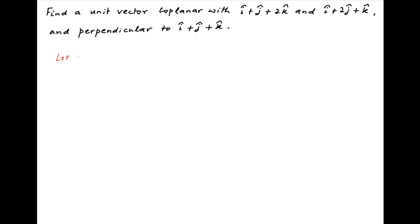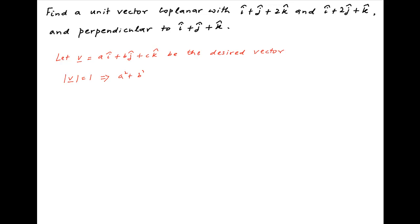Let the desired vector be equal to ai plus bj plus ck. Let's denote this vector by vector v. Now this is a unit vector, therefore the absolute value of vector v is equal to 1, which implies that a squared plus b squared plus c squared is equal to 1.